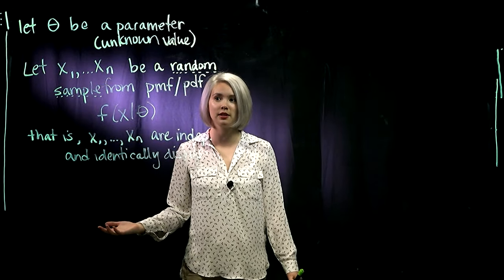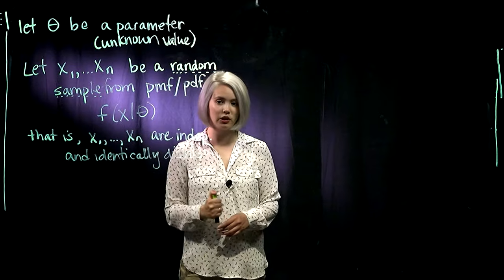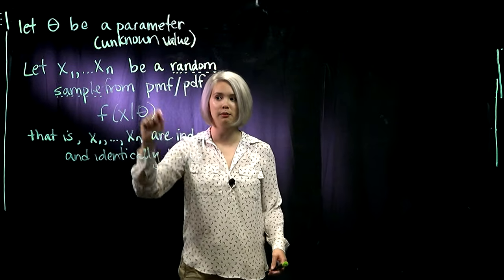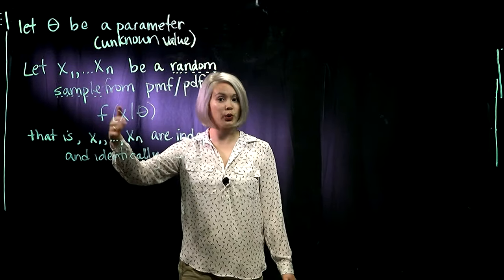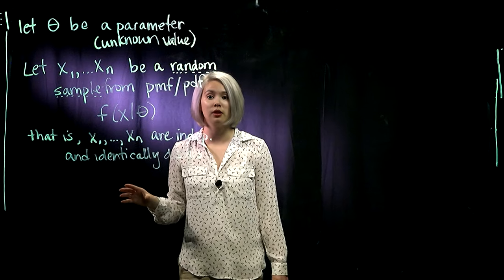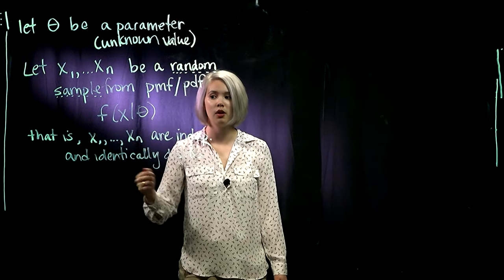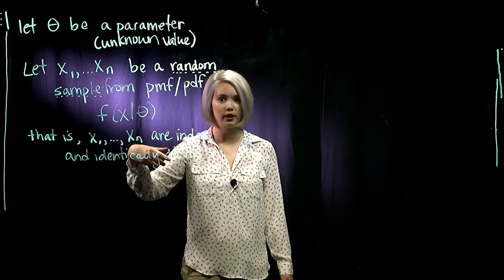And if they're independent and identically distributed, then we'd have a random sample. So we have x1 through xn, that's a random sample of size n from our PMF or PDF, f of x given theta.